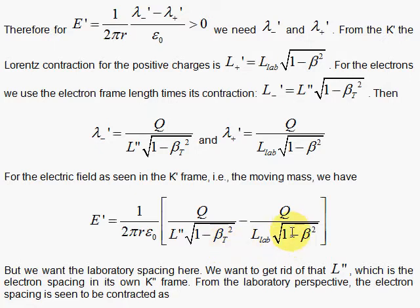For the positive charges, you start with the separation distance in the natural frame where they are at rest, and that is the laboratory frame. You hit it with the Lorentz contraction factor for the positive charges using the speed for the positive charges as you see them go, and that's V to the left.